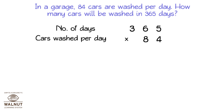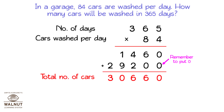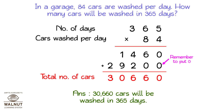We start multiplying the units. We multiply the number at the top by the digit in the units place. Then we put in a 0 and multiply with the digit in the tens place. Then we add up the two products that we have found and we get the final product. 30,660 cars will be washed in 365 days.